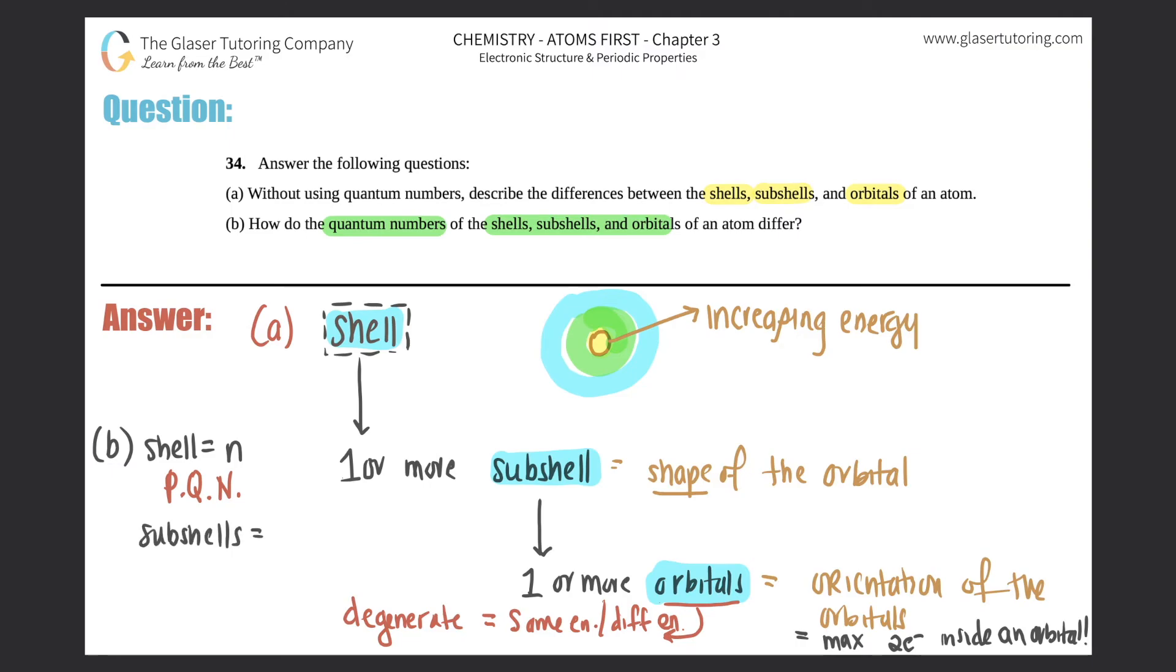For the subshells, this is the l value. So this is the angular momentum, the azimuthal quantum number or the secondary quantum number. I like to call it the angular momentum. Usually you will see that in your textbooks, especially in OpenStax they do talk about this one. So angular momentum and that will tell you the shape of the orbital.